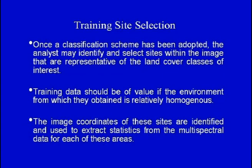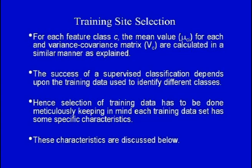The image coordinates of these sites are identified and used to extract statistics from the multispectral satellite data. For each feature class C, the mean value μCi for each band and the variance-covariance matrix VC are calculated. The success of supervised classification depends upon the training data used to identify different classes. Hence, selection of training data must be done meticulously, keeping in mind that each training data set has specific characteristics.